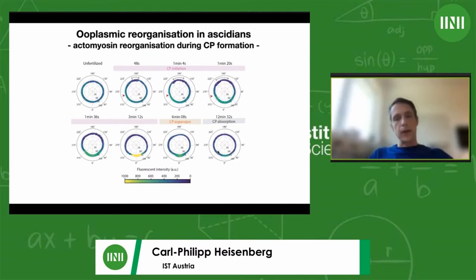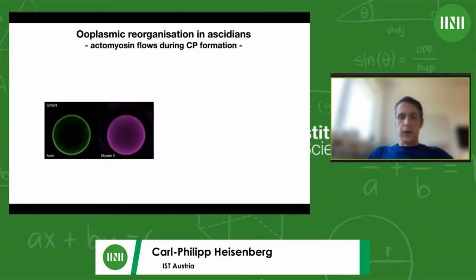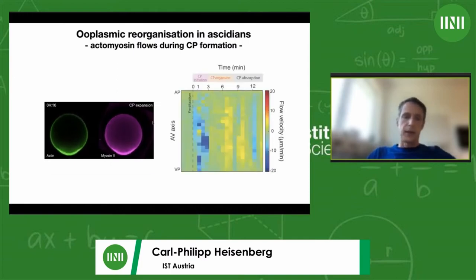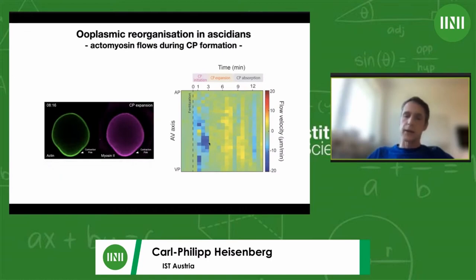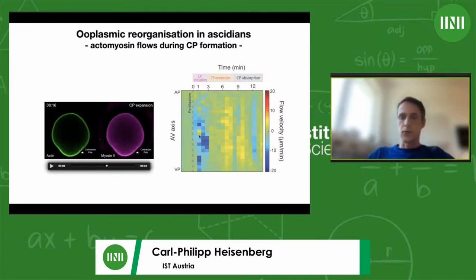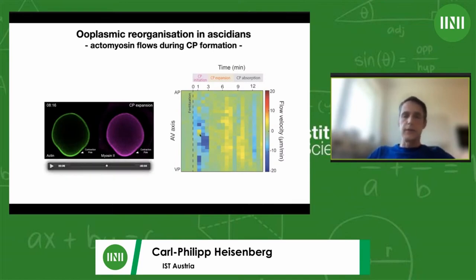This points to an interesting crosstalk between actomyosin localization and these shape changes. She correlated the localization changes with flows of actomyosin using PIV analysis. The early accumulation of actomyosin at the vegetal pole correlates with flows of both actin and myosin originating from the animal pole and directed toward the vegetal pole, eventually leading to accumulation of actomyosin. During the expansion phase there are no more flows, and during absorption phase neither — so the initiation phase is where most of the actomyosin flows occur.